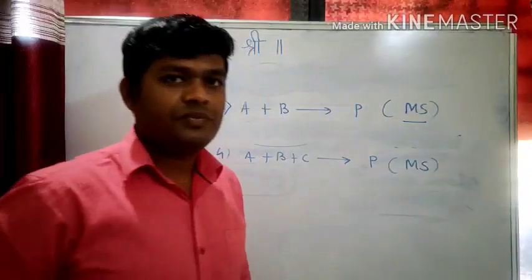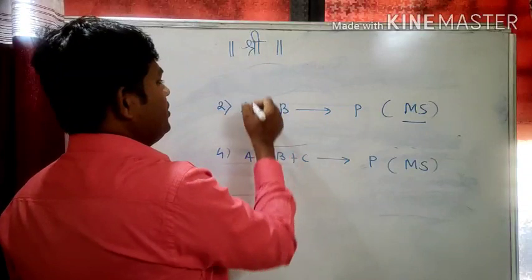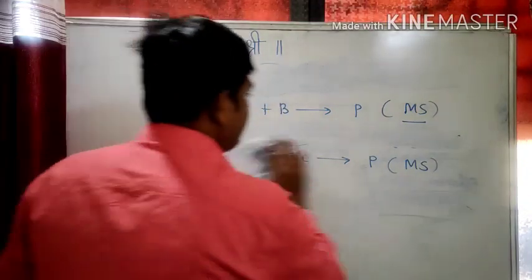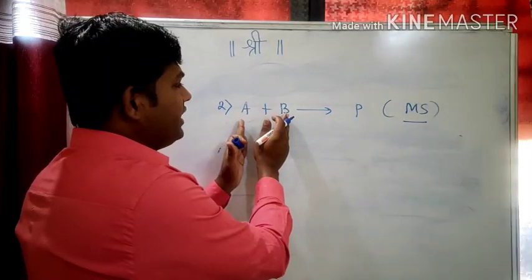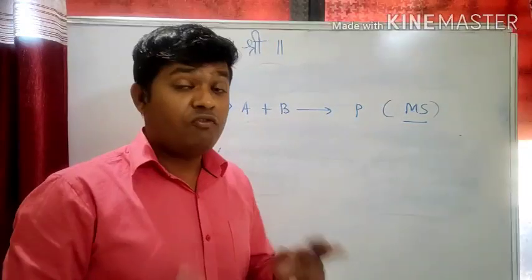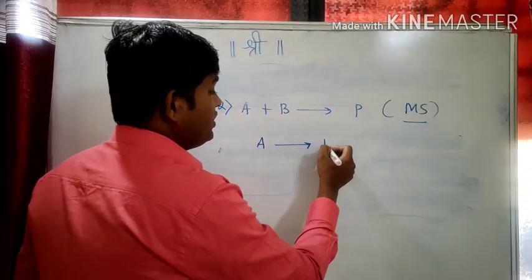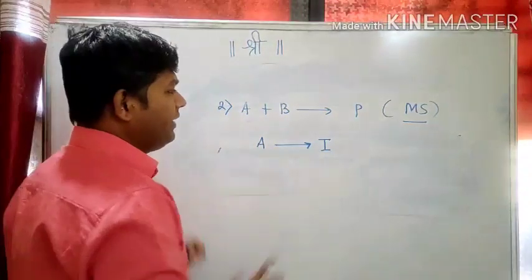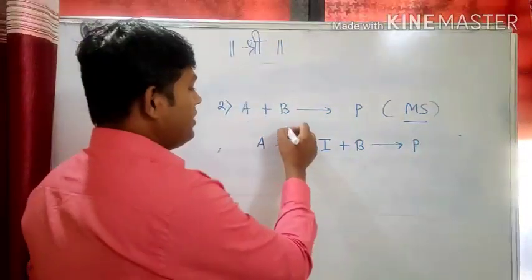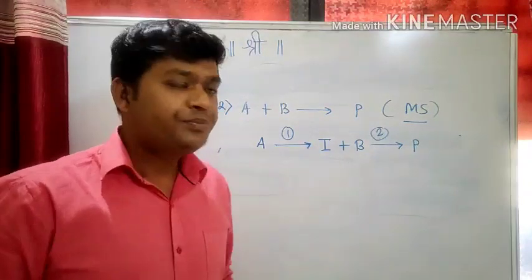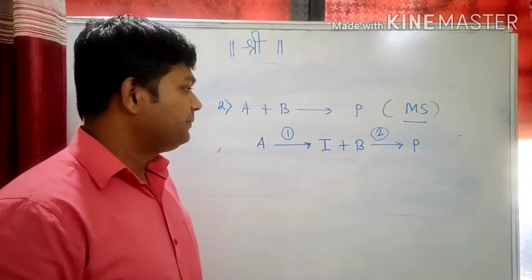Now reaction two is a multi-step reaction. Assume that this reaction involves two steps. Let us see reaction two properly: A plus B gives product P. You cannot say two molecules are involved so molecularity is 2 for a multi-step reaction. For that you should predict the slow step. Assume that reactant A gives intermediate I in the first step, which then reacts with B to form product P in the second step.